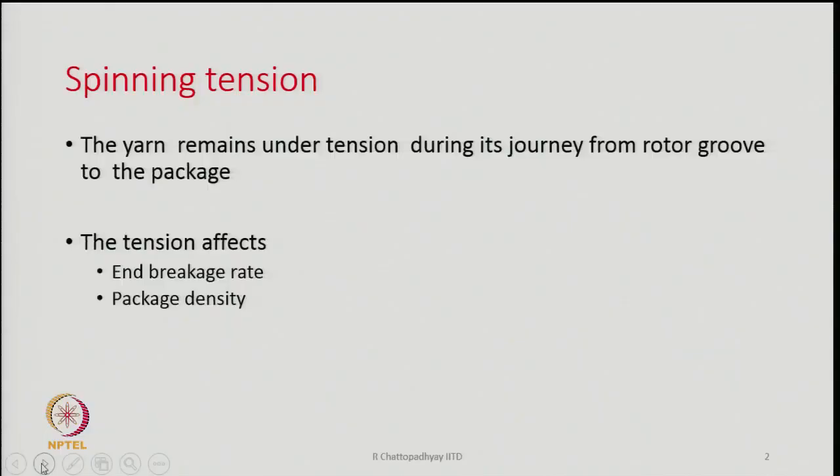Another important effect of spinning tension is package density — the density of the final package, which is most commonly a cheese or cone. The package density depends upon the tension in the yarn while it is traveling from the rotor group to its destination, the package.